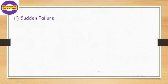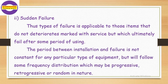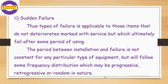The second type is sudden failure. This type of failure is applicable to those items that do not deteriorate markedly with service, but which ultimately fail after some period of use. The period between installation and failure is not constant for any particular type of equipment, but will follow some frequency distribution which may be progressive, retrogressive, or random in nature.